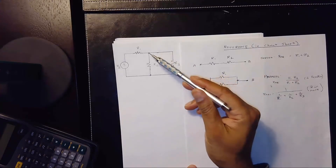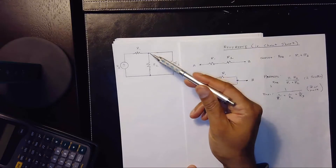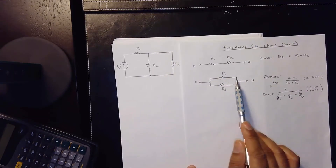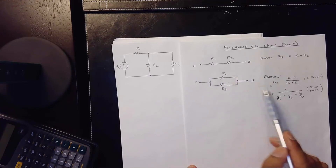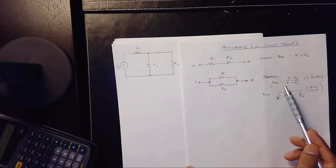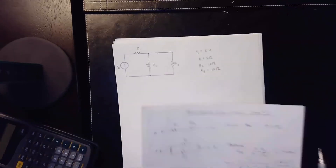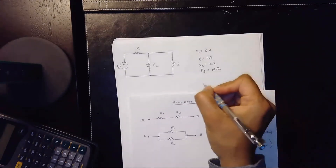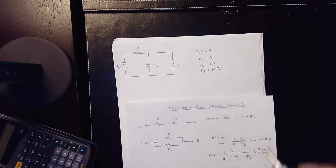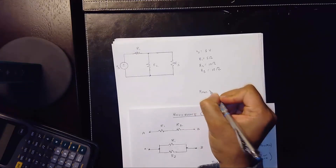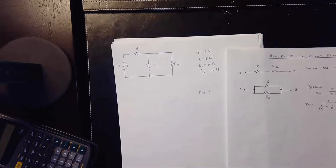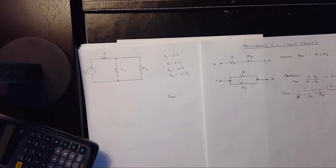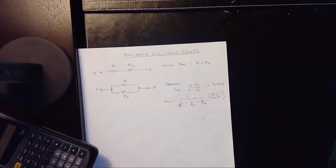Clearly there is one path and two paths, and these are one-to-one — so it is a parallel circuit. We call this REQ1. REQ1 equals R1 times R2 divided by R1 plus R2 — this is the two-resistor parallel equation. Let me rearrange it so you can see it clearly beside the diagram.